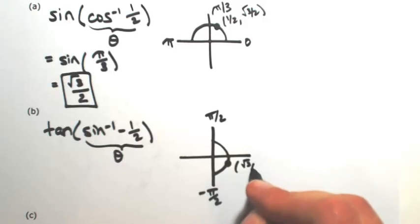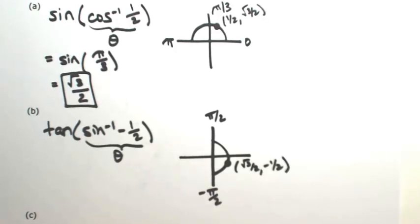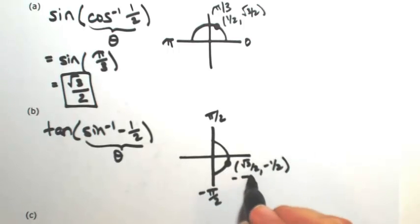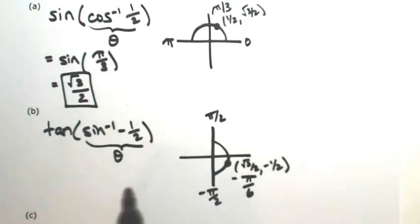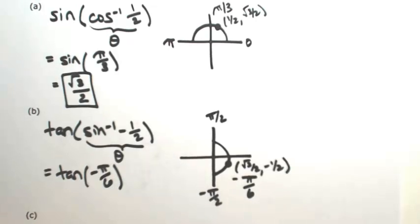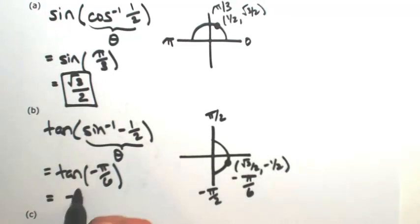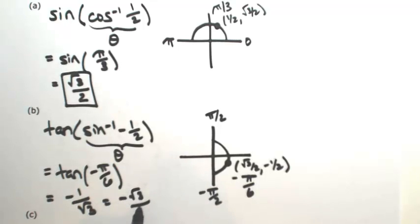That point is (√3/2, -1/2). Ordinarily we would call that 11π/6, but with the restriction between negative pi over two and pi over two, it's the clockwise angle negative pi over six. That's just the first part. Now we need to find the tangent of that same angle — tangent is y over x. The halves cancel, leaving negative one over square root of three. Rationalizing gives negative square root of three over three.